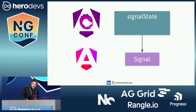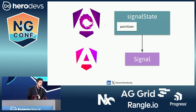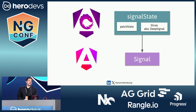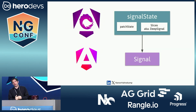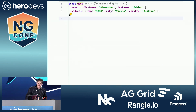What Signal State does is extend the normal signal by giving you better ways to update the signal itself — that's done by the patch state function. The other thing is the slices, or the deep signal type, which is for the reading part. So you have two extensions: one for writing and another for reading — and the use case is large objects.